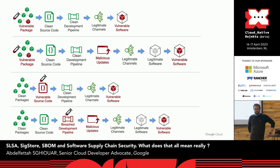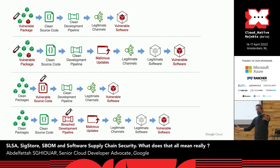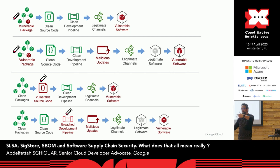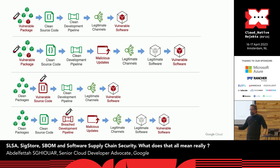This can be problematic in many ways. You could start with a vulnerable package. You write your own code — your code is good, you're a good developer. You have a clean development pipeline and legitimate channels to distribute your software to production systems. Hopefully you're not rebuilding your artifact between dev, stage, and production. But you can still end up with vulnerable software just because you had a vulnerability in a package you depended on.